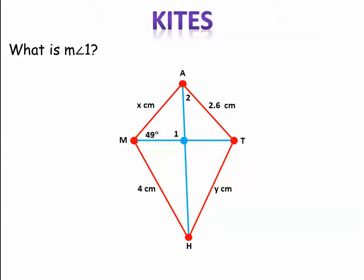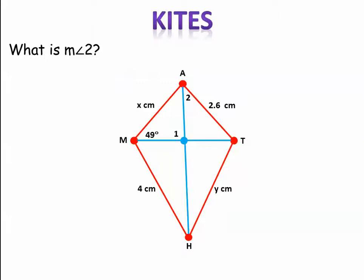If I look at this figure, knowing that the diagonals of a kite are perpendicular, what is angle one going to equal? The measure of angle one is going to equal 90 degrees, just because AH is perpendicular to MT. In this next one, they're asking what is the measure of angle two? Let's determine what we know.